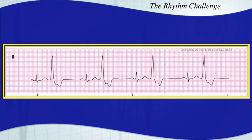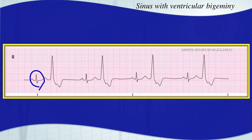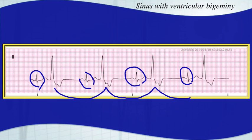Starting to get a little bit harder here. This is a sinus rhythm with ventricular bigeminy. Your underlying rhythm is obviously sinus, and then every other beat is a PVC. So it is monomorphic, or unifocal, ventricular bigeminy.